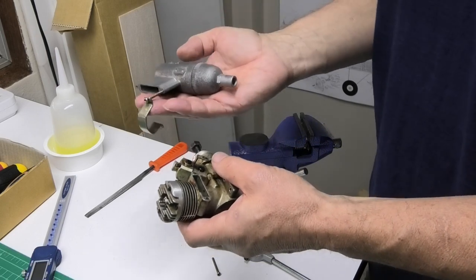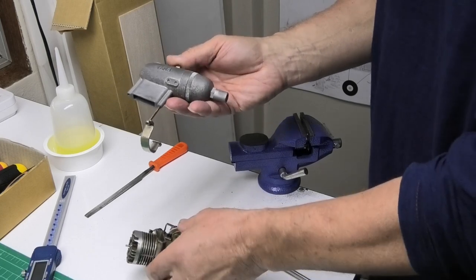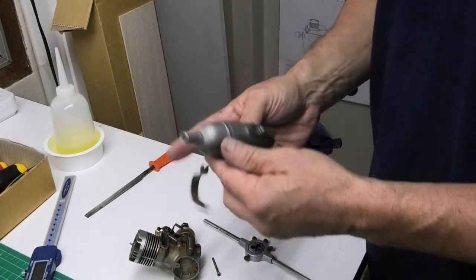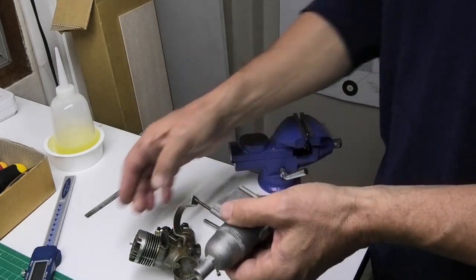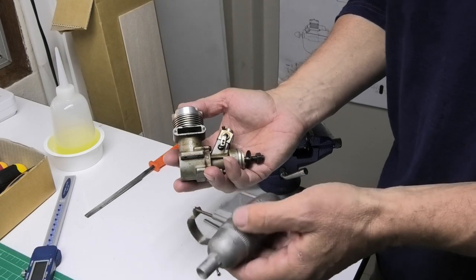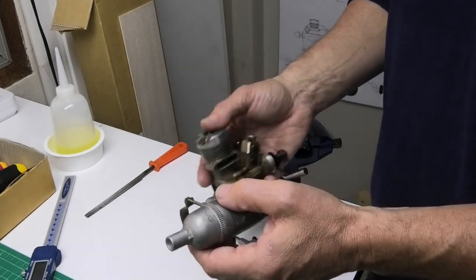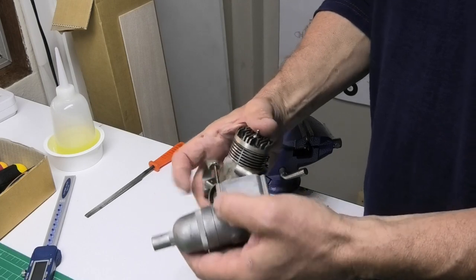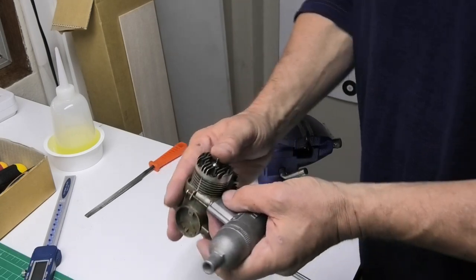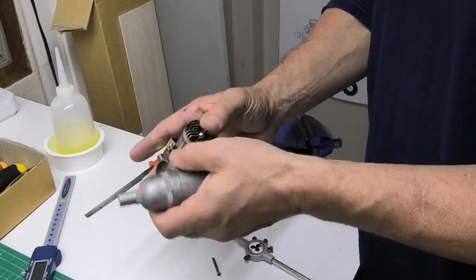It came with the silencer, muffler, the standard Enya silencer that comes with this model. I have cleaned this up and it looks a lot better than it did. It was quite gummed up with probably the residue from castor oil. The muffler bolts on, or screws on with a strap, put it round and tighten up the screws. Great design, nice and solid.